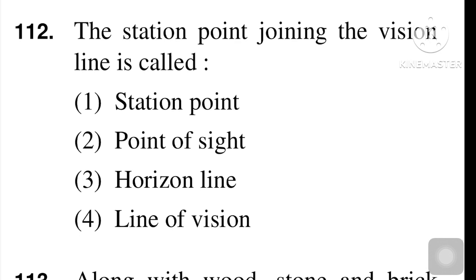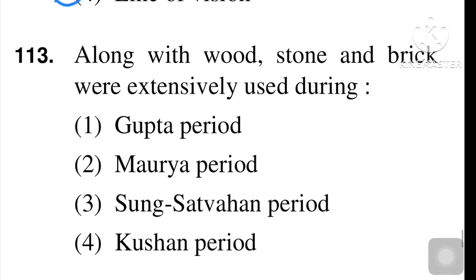Next question: the station point joining the vision line is called — station point, point of sight, horizon line, or line of vision. Right answer is number four, line of vision. Next question: along with wood, stone and bricks were extensively used during which period — Gupta, Maurya, Sung-Satavahana, or Kushan? The right answer is Maurya period.